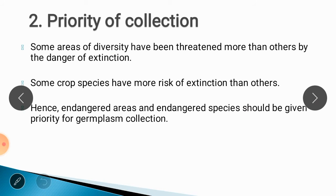The next important step is priority of collection. Some areas of diversity have been treated more than others, and are under danger of extinction. Those areas we have to take on priority for collection of plant species. Some crop species have more risk of extinction than others, so endangered areas and endangered species should be given priority for germplasm collection.